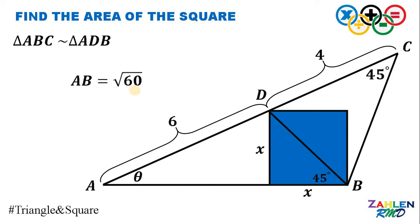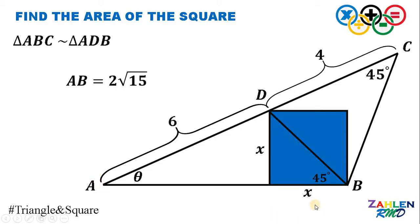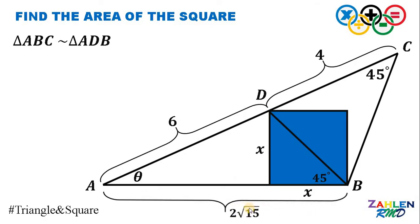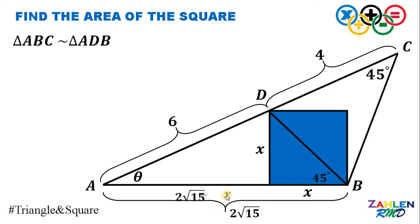It follows that AB must be equivalent to the square root of 60. Since 60 is 4 times 15, AB must be equivalent to 2 times the square root of 15. Now we know the length of segment AB, which is 2√15. Since this segment measures x, it follows that the other segment must be equivalent to 2√15 minus x.